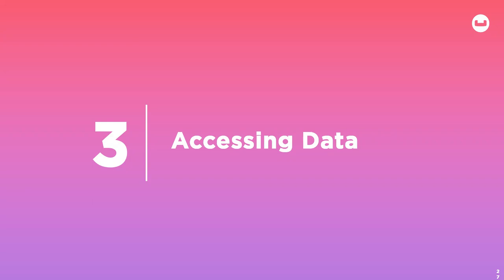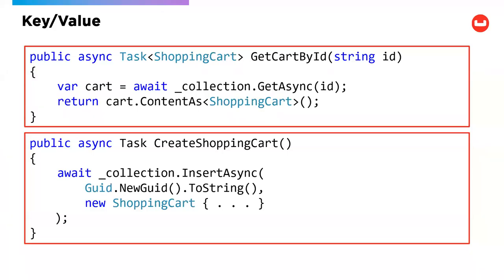The way your data is modeled is not just about a whiteboard exercise — it's also about how your application is accessing the data, and this can affect how you want to model it. With relational, you only really have one way to access data: SQL. With a NoSQL database, we have multiple ways to access data, including SQL. For key-value access, if you know the key already, it's a really simple and extremely fast way to access that piece of data. In this C# example, the first function gets a JSON document by ID and returns it as a shopping cart object; create shopping cart uses collection.insert with a new ID — no need to write SELECT or INSERT statements.